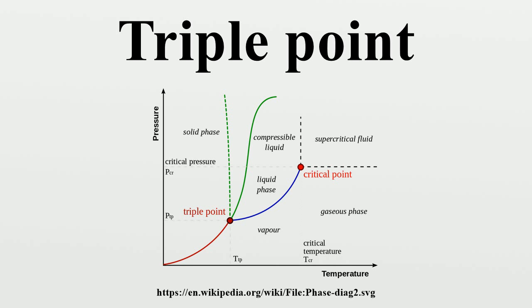At pressures below the triple point, solid ice when heated at constant pressure is converted directly into water vapor in a process known as sublimation.